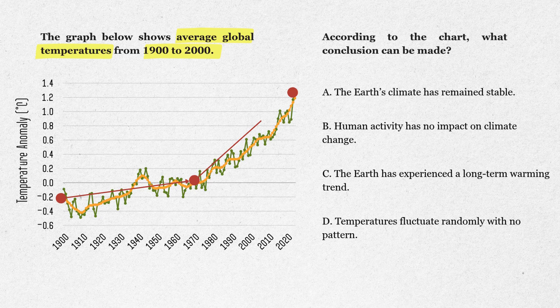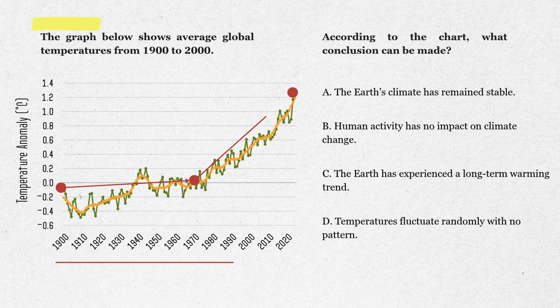By 2000, the anomaly is well above zero, close to one degree warmer. So the clear pattern here is a long-term warming trend.